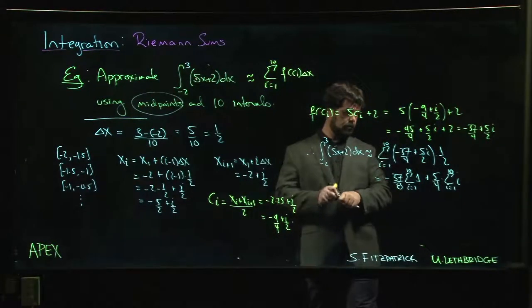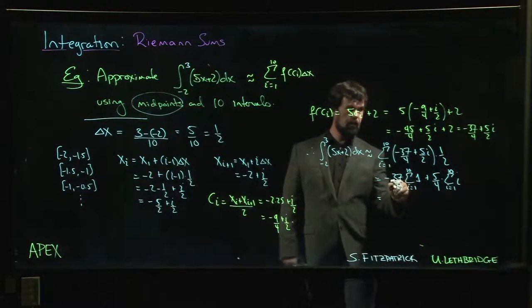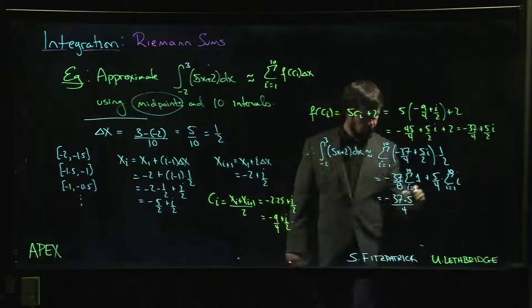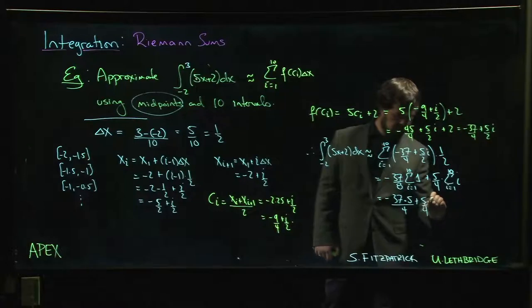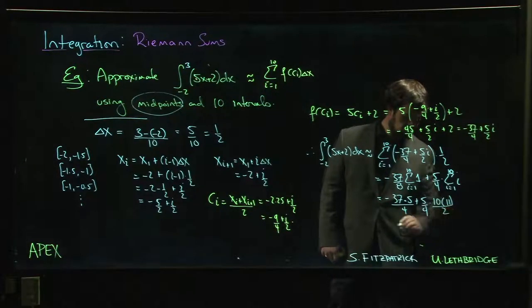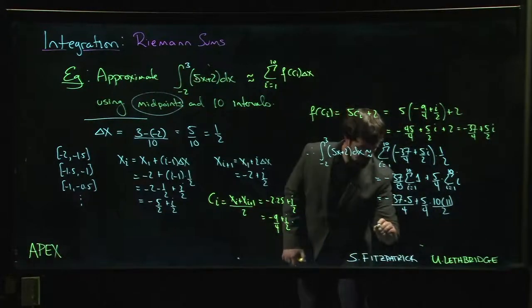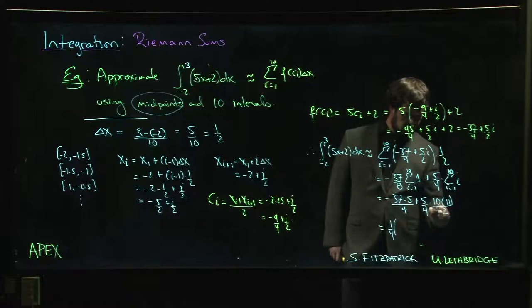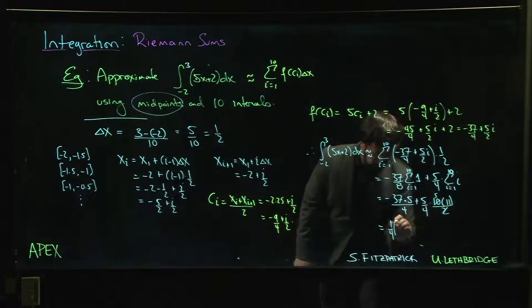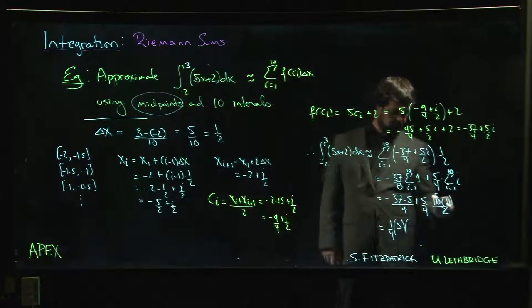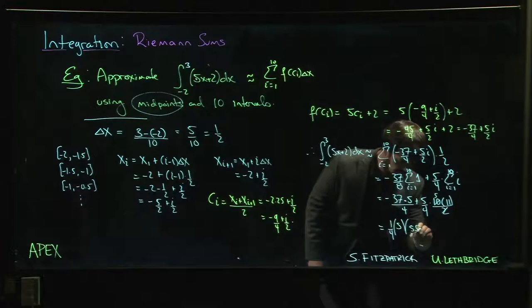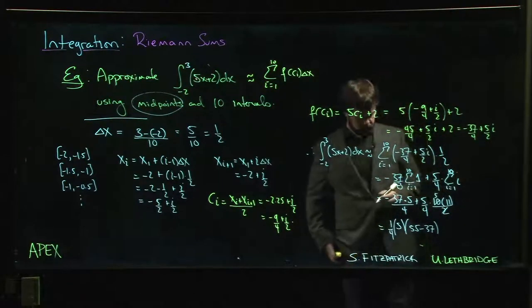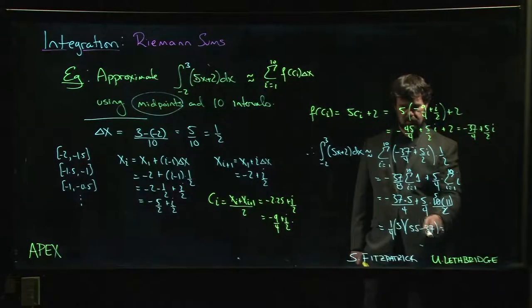So we multiply by, we get 10 here. So we're going to get, so 10 over 8, 5 over 4, 37 times 5 over 4 plus 5 over 4 times 10 times 10 plus 1, which is 11 over 2. So 1 over 4, let's try to clean this up a little bit. There's a quarter, there's a quarter, 5. 5 and 5, let's factor out that 5 as well. And then what are we left with? So here we have 5 times 11, 55 minus 37. So 55 minus 37 is going to give us what? 18. Is that right? Yeah. Add 8, 18.